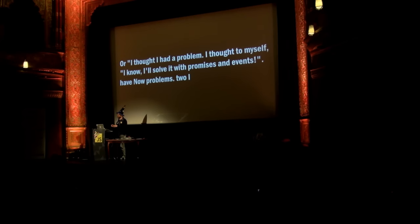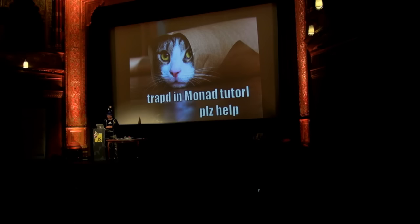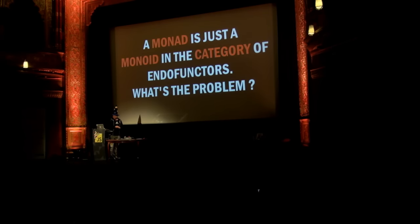I started with a little bit of levity. I thought I had a problem, so I thought I'd solve it with promises and events — and now I have two problems. This is not going to be a talk about monads or category theory. A monad really is just a monoid in the category of endofunctors — what's the problem? It should be rather simple to understand.